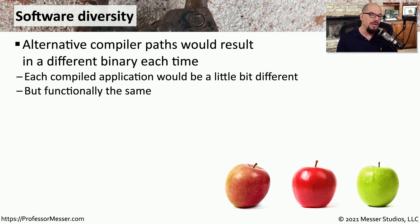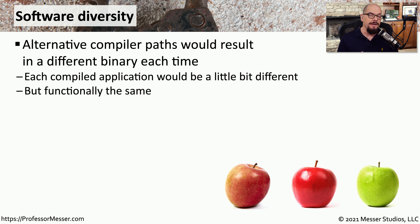We refer to this as software diversity. We use different tricks in the compiler to change where the paths go during the compilation process. This means that the final binary file will be different every time you compile the application. This won't change the functionality of the application or the way that it works — it only changes the final binary file itself.